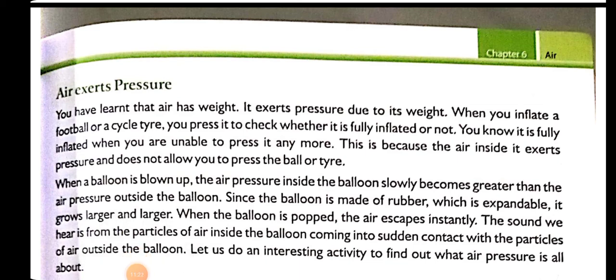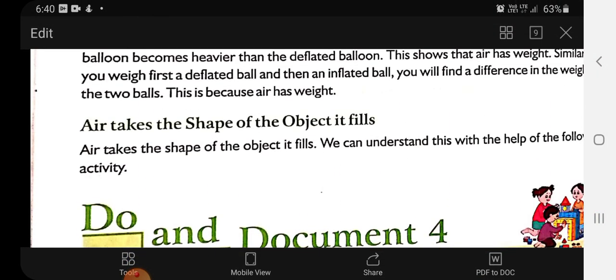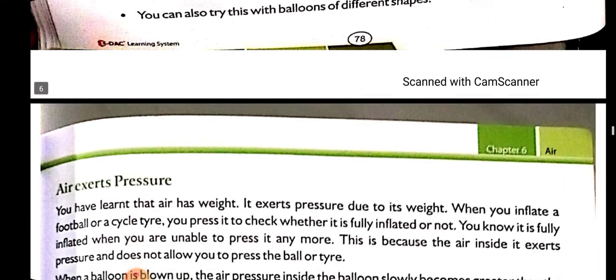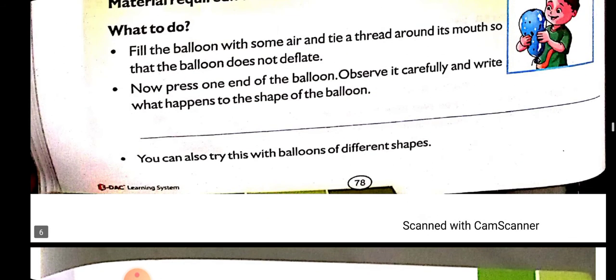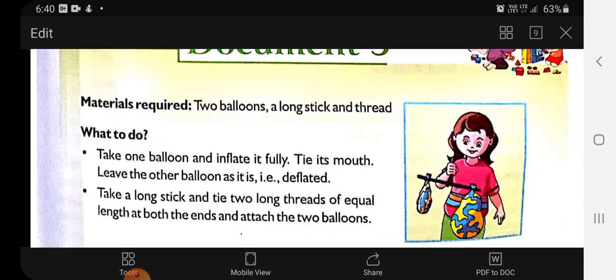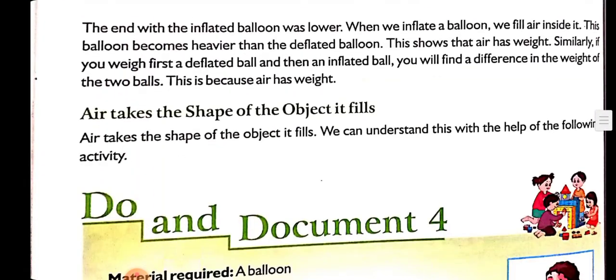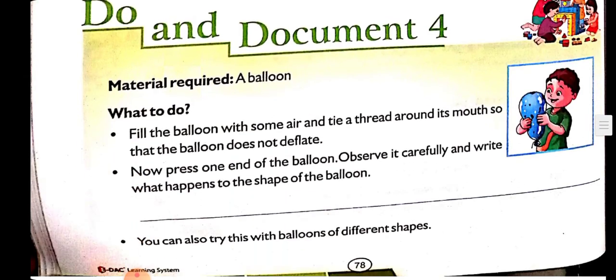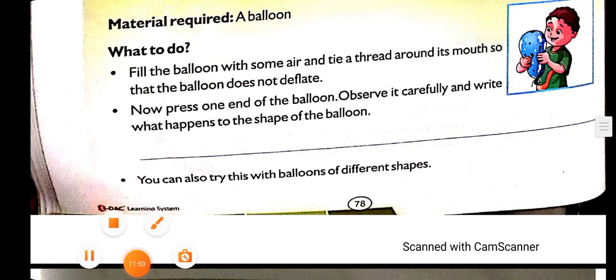So today we covered up to this activity — air takes the shape of the object it fills. In the next video, we will start with air exerts pressure. Till then, read these three properties of air: air has weight, air occupies space, and air takes the shape of the object it fills. Okay everyone, bye-bye!